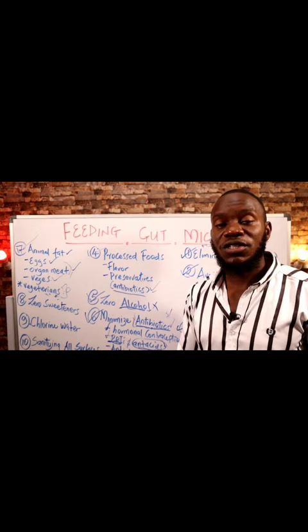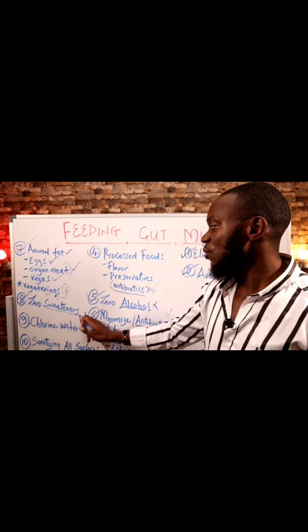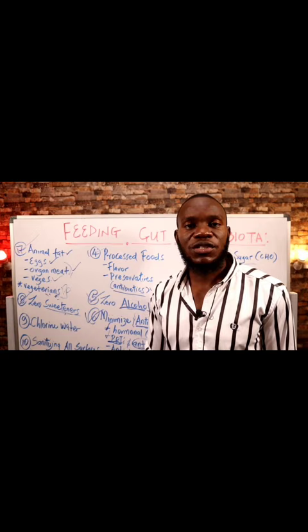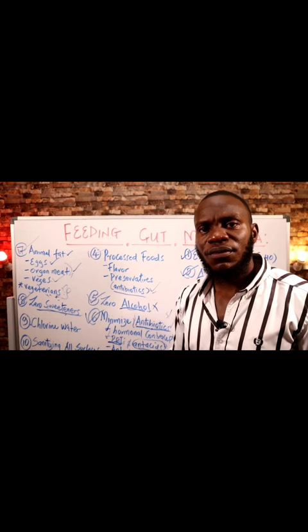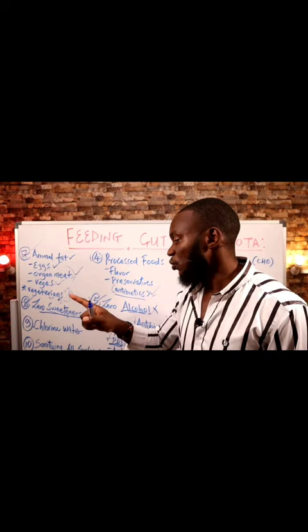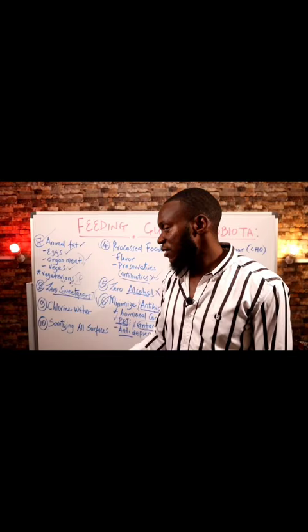Number eight: zero sweeteners — be it artificial or natural sweeteners, drop them totally. Aspartame may not raise your insulin levels, but why do you need to sweeten your food? Why are you so addicted to sweet things? Sugar has no replacement. Do not replace sugar with anything. Enjoy your foods in their natural state so that you can fix your dopamine addiction and also fix your gut microbiome.